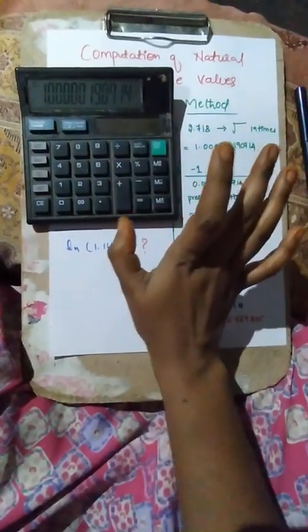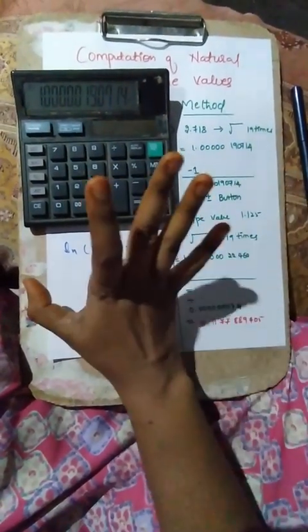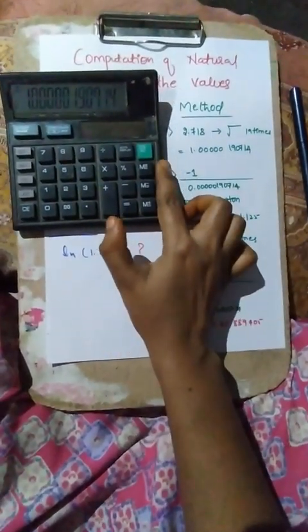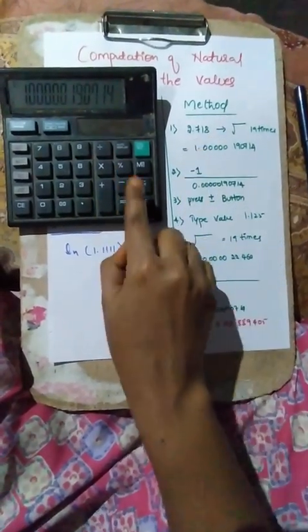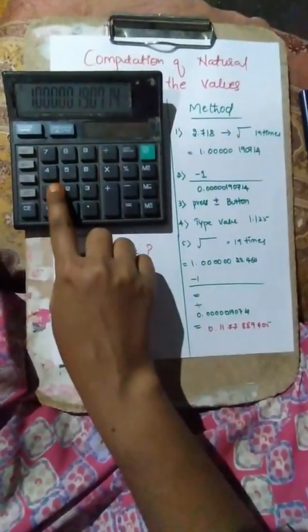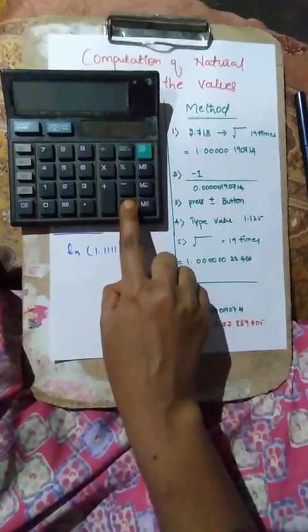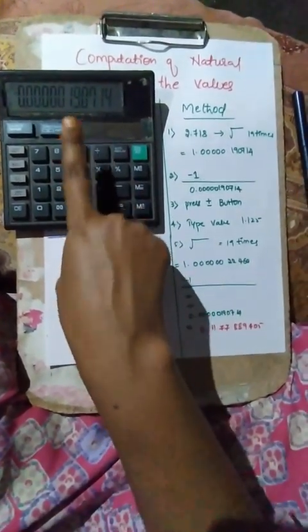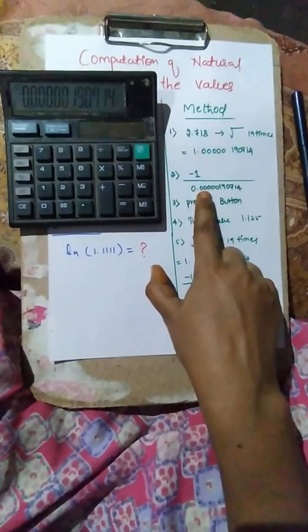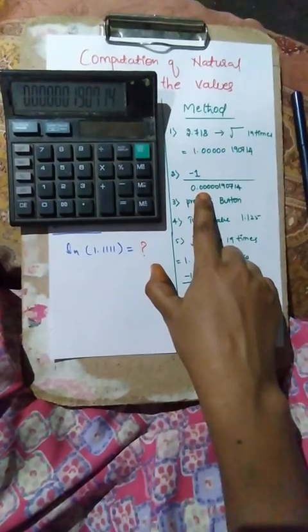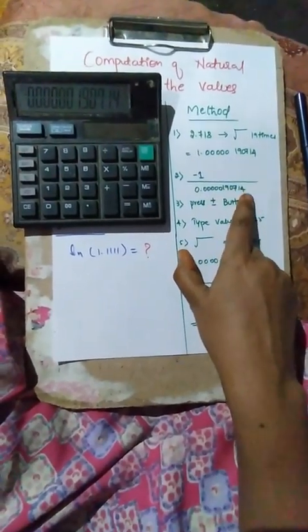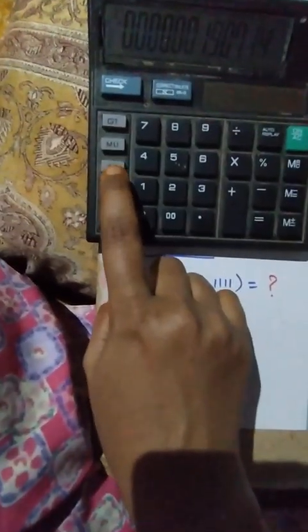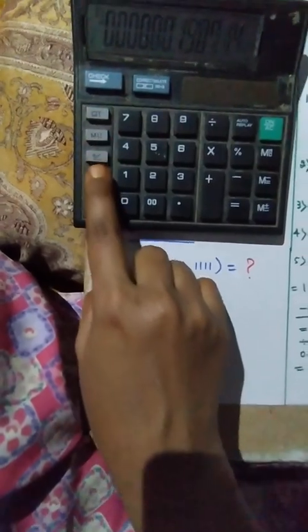So we have pressed 2.718 nineteen times. The next step is we have to subtract 1 from it. This will be the value: 0.000190714. Next, we have to press this plus-or-minus button one time.